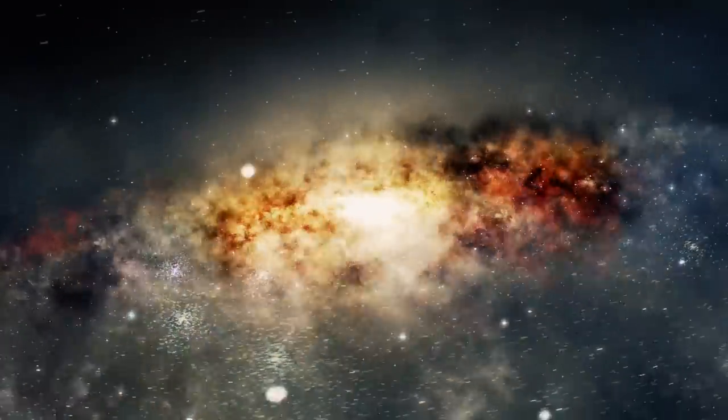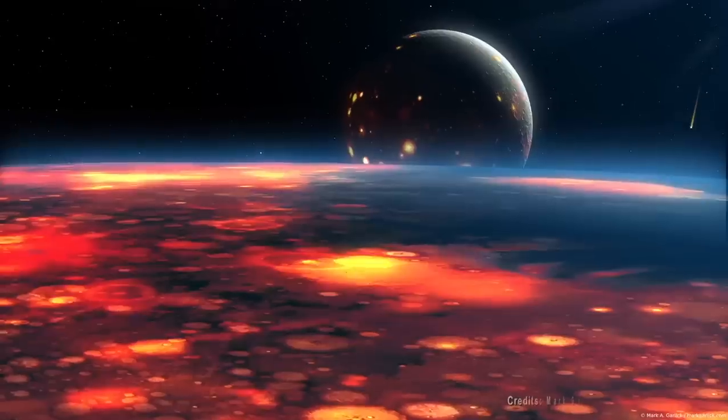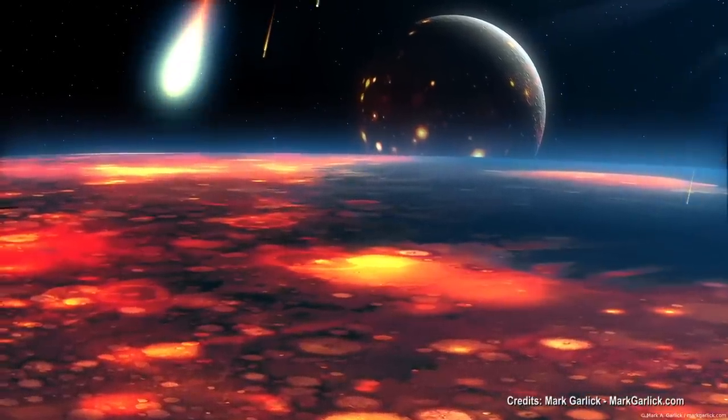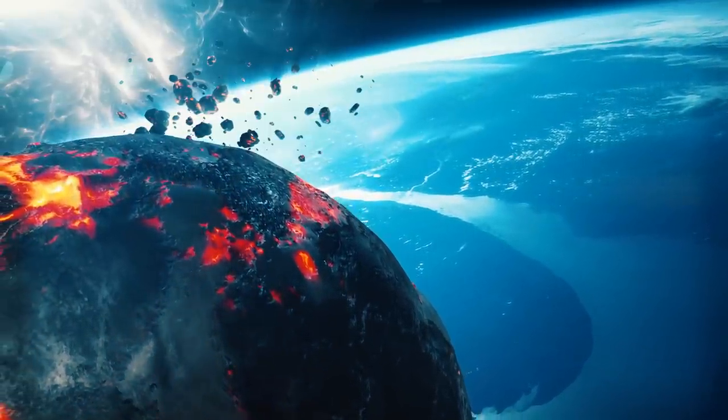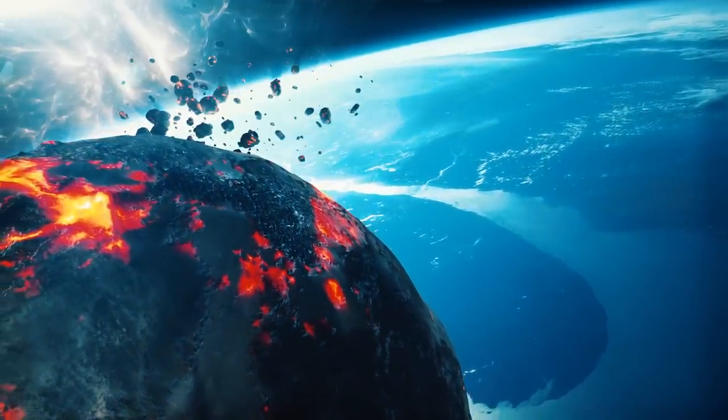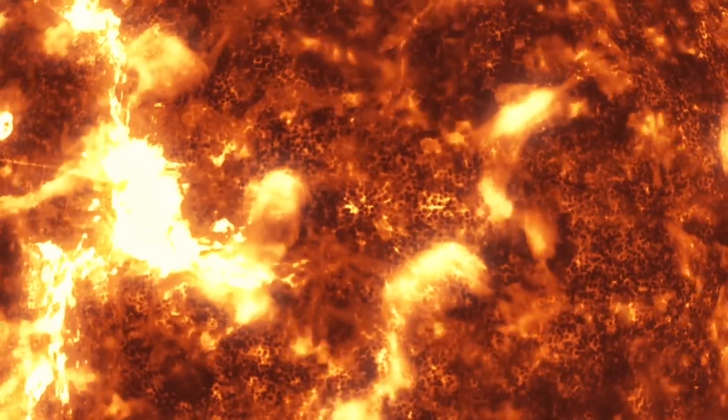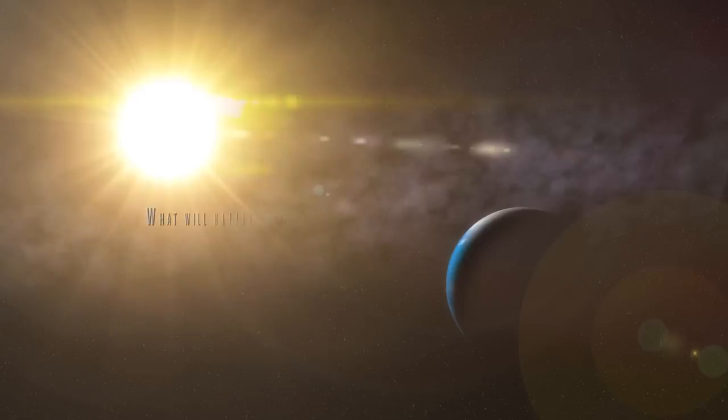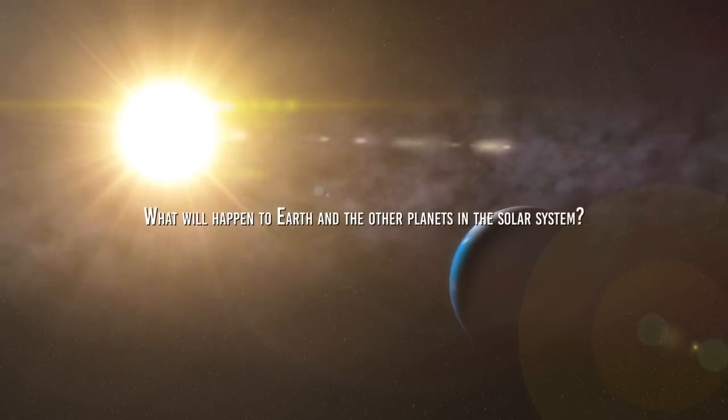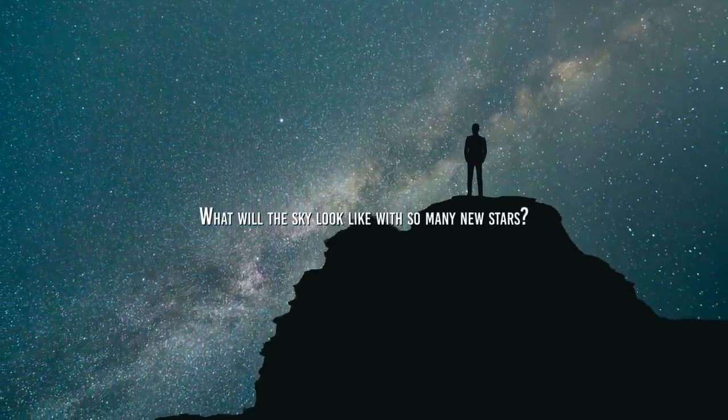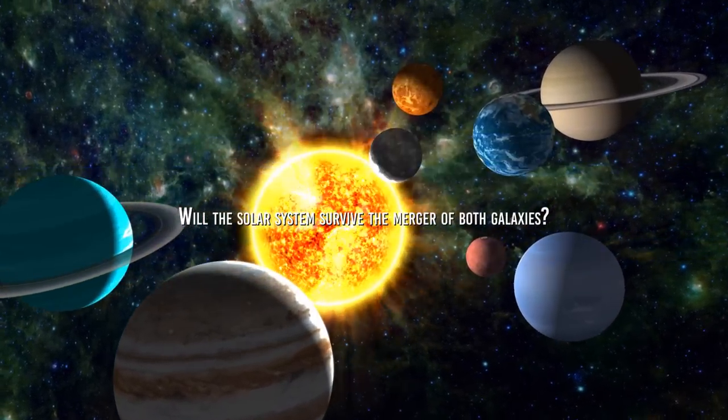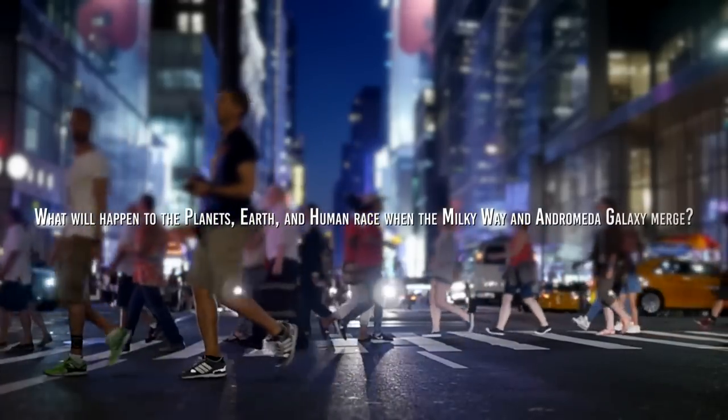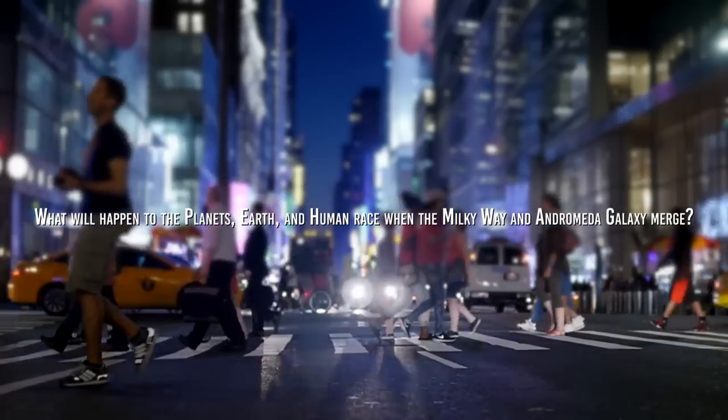It's also essential to consider that the merger of galaxies could cause a higher rate of collisions between astronomical objects, such as stars and planets. Although the probability of a collision affecting the solar system is low, this possibility cannot be completely ruled out, especially considering the size of the sun. What will happen to Earth and the other planets in the solar system? Could a star collide with the sun? What will the sky look like with so many new stars? Will the solar system survive the merger of both galaxies? And most importantly, what will happen to the planets, Earth, and human race when the Milky Way and Andromeda galaxy merge?